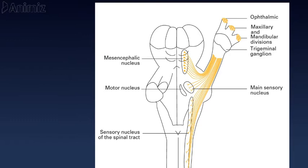The motor nucleus arises at the level of the pons, medial to the main sensory nucleus. The fibers arising from these nuclei form roots. The sensory fibers form a sensory root that is large and single, and the motor fibers form a motor root that is small and always passes below the sensory root.